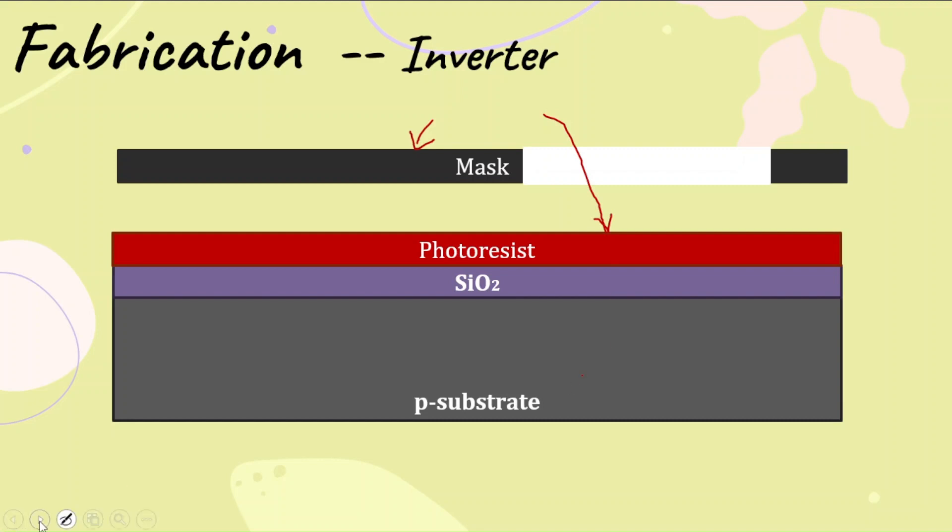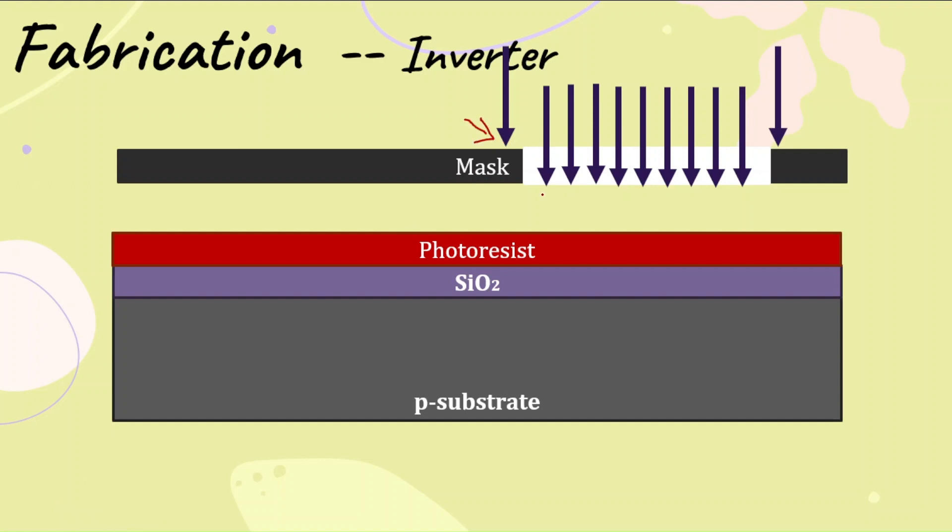You can see it clearly when you expose the wafer to UV rays. The black area is blocking the light, whereas this area is allowing the penetration.